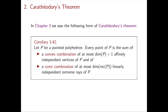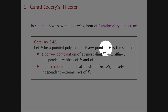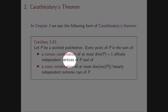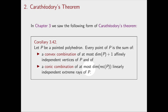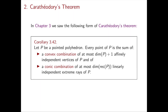The next result is Carathéodory's theorem — here I copy the most general form from chapter 3. If we have a point in polyhedron P, then every point in P can be written as the sum of a convex combination of at most dim(P) + 1 affinely independent vertices of P, plus a conic combination of at most dim(recession cone of P) linearly independent extreme rays of P.